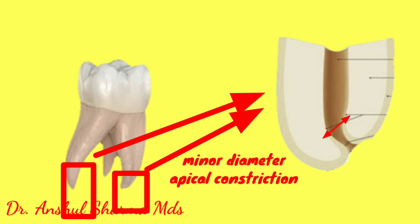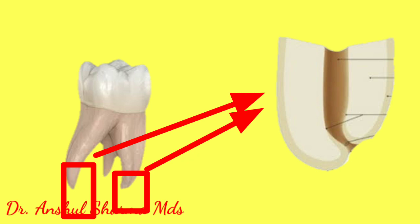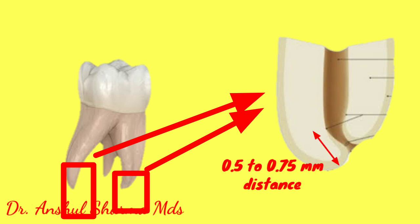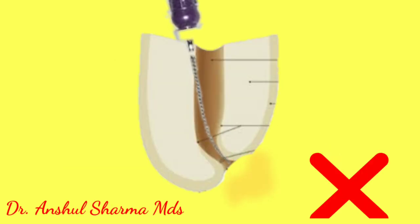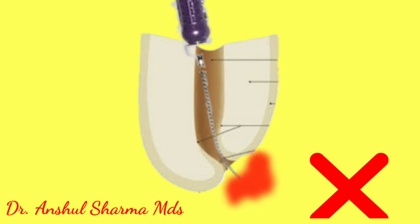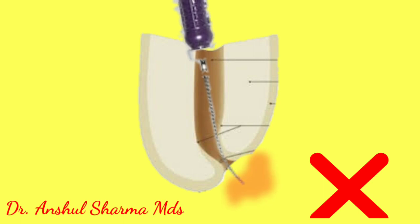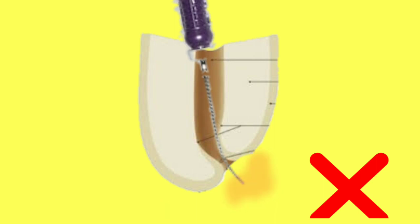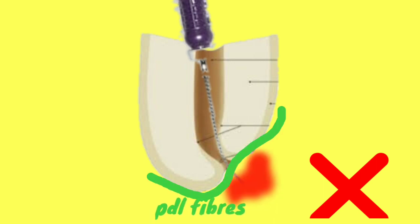The other part is the minor diameter, also known as the apical constriction. The apical constriction is commonly 0.5 to 0.75 millimeters away from the anatomical apex. This is why our obturation and biomechanical preparation should always be 0.5 millimeters shorter than the anatomical apex — breaching this landmark will irritate the PDL fibers and cause postoperative pain.